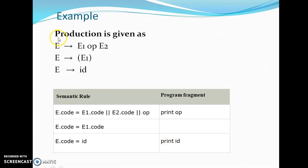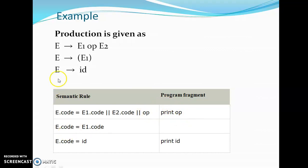Here is an example of postfix notation using grammar production rules for e. Three productions are given: e → e1 op e2, e → e1, and e → id. For the first production, the semantic rule uses e1.code, e2.code, and the operator — the program fragment prints the operator. For the second production, e.code = e1.code, so no additional program fragment is needed. For the third production, e.code = id, where id is a terminal symbol, so the program fragment prints id. This demonstrates postfix notation.